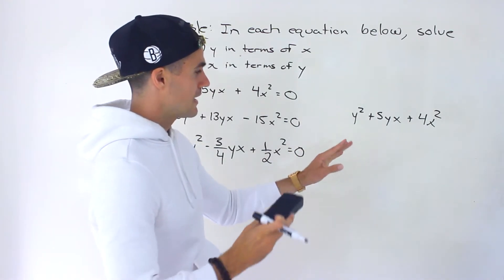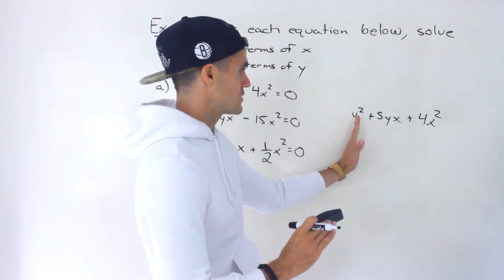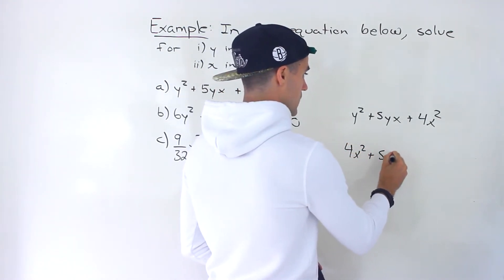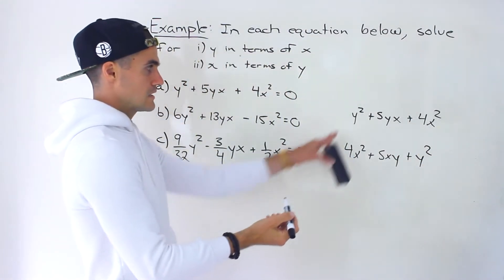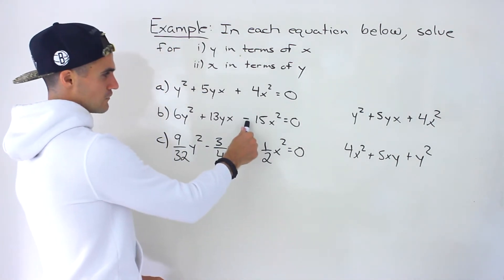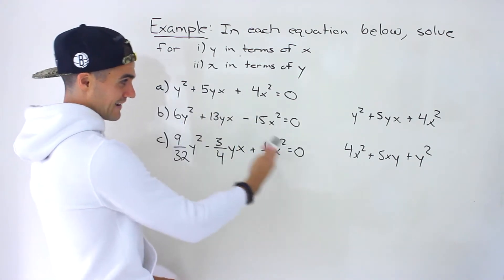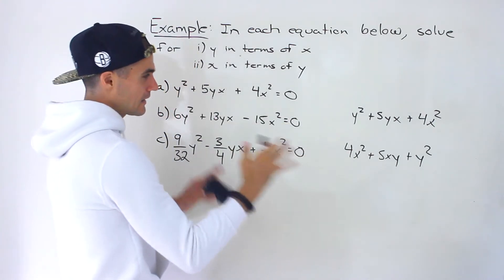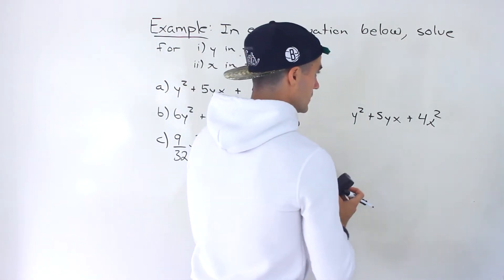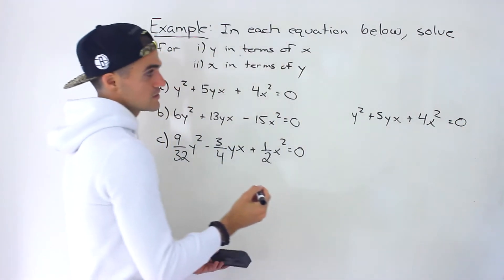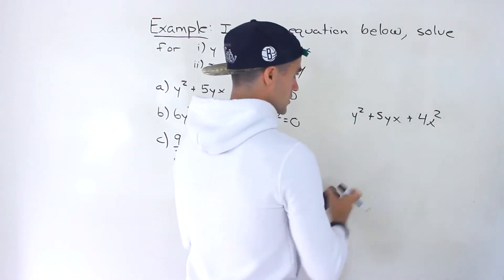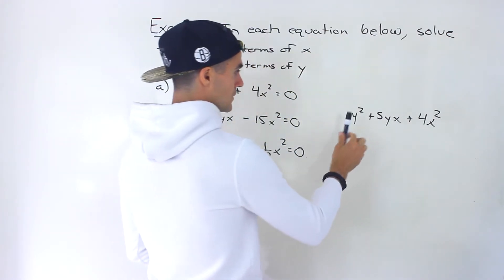One thing I want to mention — this is in a different format. A lot of times we have x first, so you could rewrite this as 4x squared plus 5xy plus y squared. This and the original are basically the exact same thing. But sometimes it's tough to rewrite it if you have a negative, because bringing a term to the front might require taking out a negative, which can get tricky. So I wanted to include examples like that so you're not intimidated. For now, I'm just going to work with factoring this directly. We always check first: can we take out a greatest common factor?